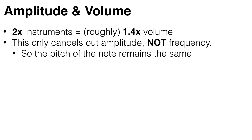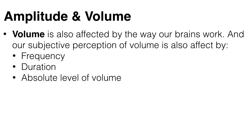So each time you double the number of instruments, you only increase the amplitude by roughly 1.4 times. And note that this only cancels out amplitude, not frequency, so the pitch of the note remains the same.